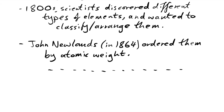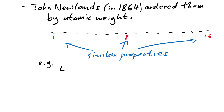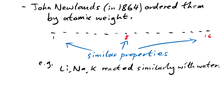And what he found was that every eighth element had similar properties. In other words, they acted in a similar way. For instance, he found that lithium, sodium, and potassium all reacted similarly with water. And they were every eighth element — there were seven elements between lithium and sodium, and seven elements between sodium and potassium.